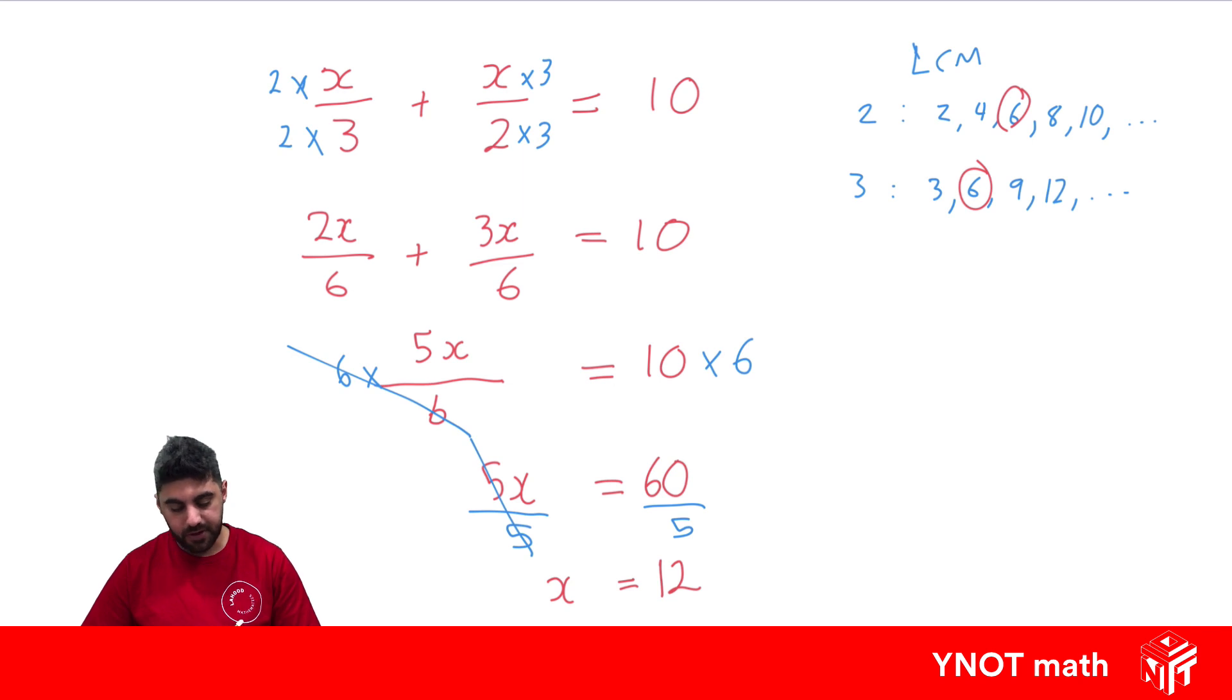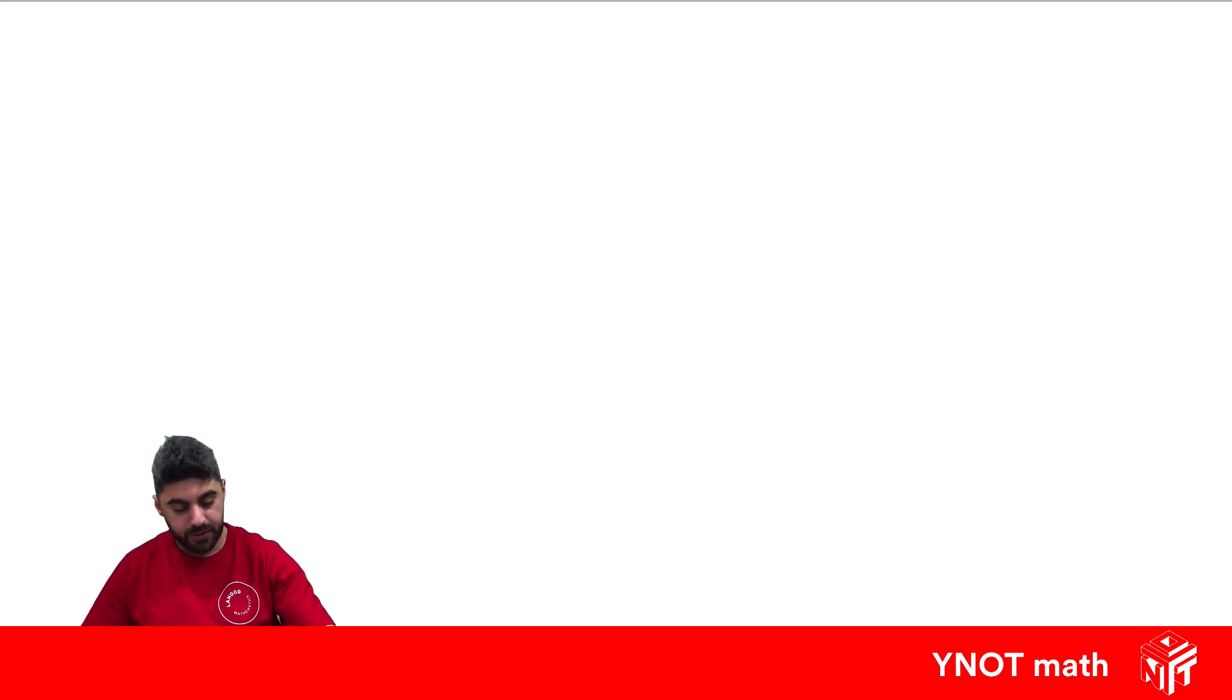All right, we're going to look at the same question and solve it a different way. A bit more of an advanced way, but let's have a look. If you like it, feel free to use it. Okay, so the exact same question. x over 3 plus x over 2 equals 10. In this way you still need the lowest common multiple, but we've already found out that it's 6.